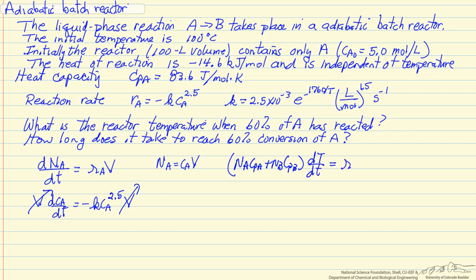This is equal to the rate of reaction of A times the volume, so this is the number of moles per time, times the heat of reaction per mole. Now I'm going to simplify this because the heat capacities of A and B are the same, so I can write this as the heat capacity of A.